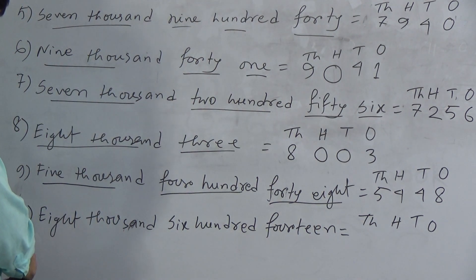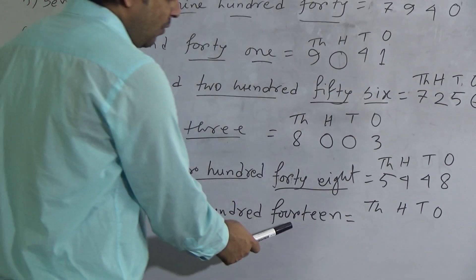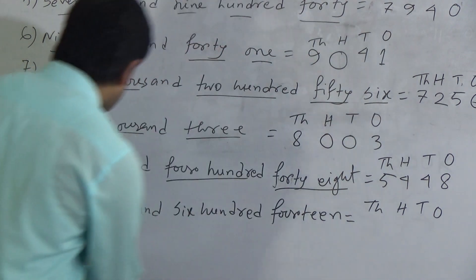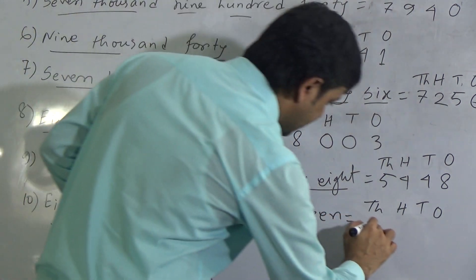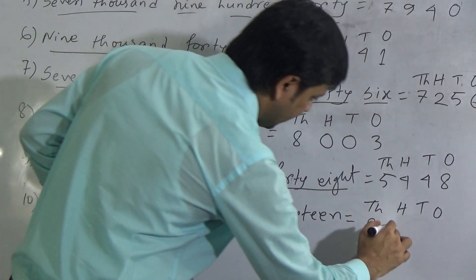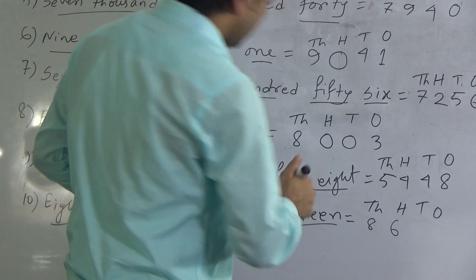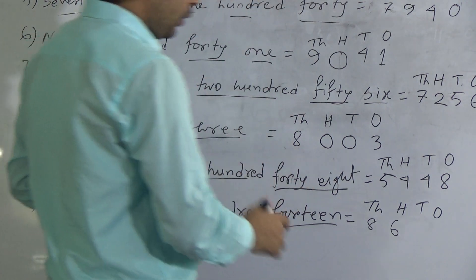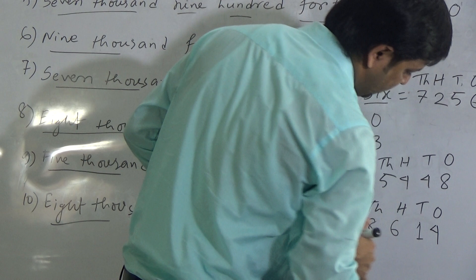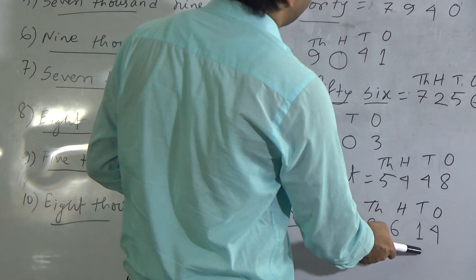The last question today: eight thousand six hundred and fourteen — 8614. As here is 8000, we write 8 below thousands. Here is 600, so we write 6 below hundreds. To write 14, we write 1 below tens position and 4 below ones position. This is 8614.